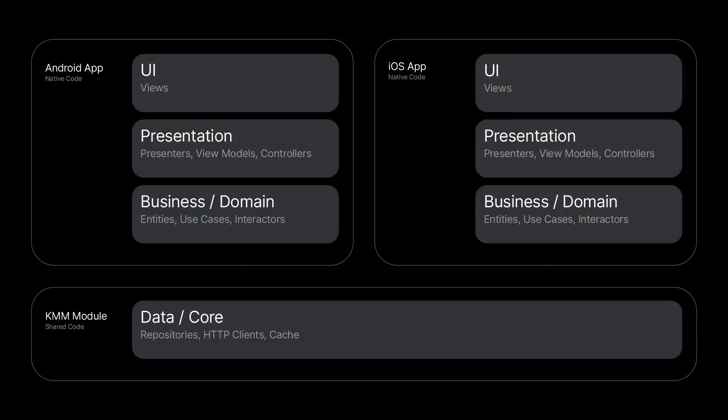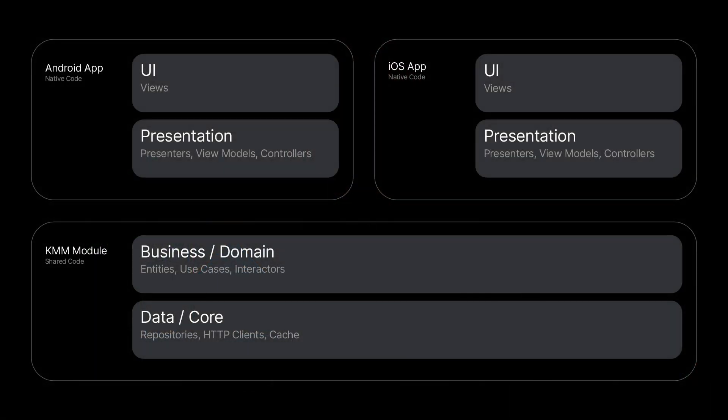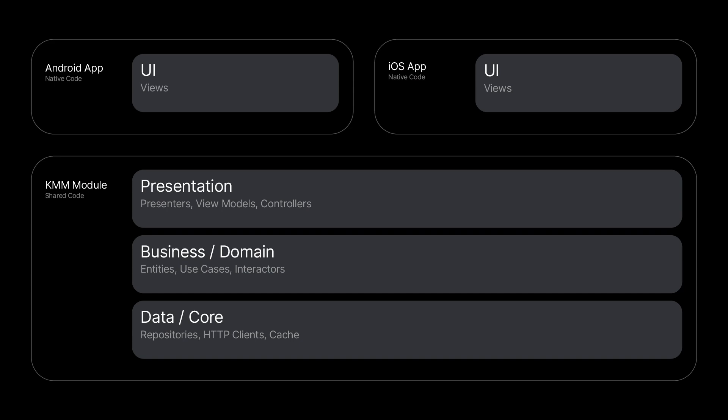You may decide to share only data layers using popular libraries such as Ktor or SQLDelight. Probably, you already have mobile applications in production, in which case you can use KMM when you need to implement some new data processing algorithms, for example. This logic could be easily integrated into the existing projects, guaranteeing identical behavior on both platforms. If your iOS and Android apps are sufficiently similar, you can use KMM to share the presentation logic, allowing you to use a single presenter, viewmodel, viewcontroller, or even navigation logic. In the next videos in the series, we will be taking a look at various projects and sharing strategies.